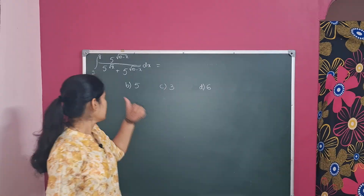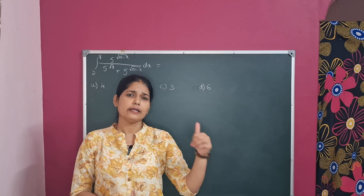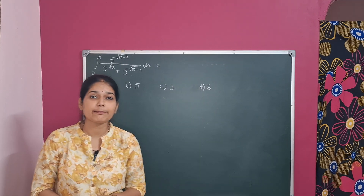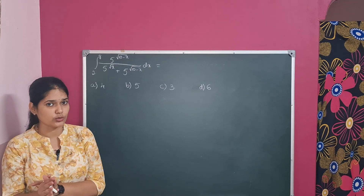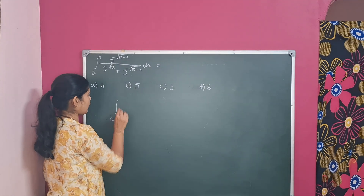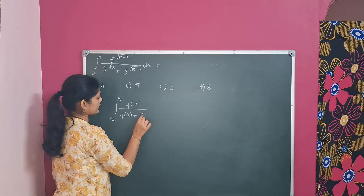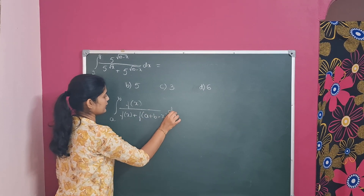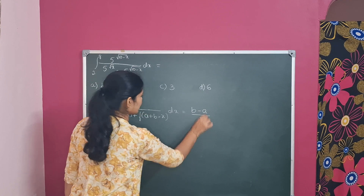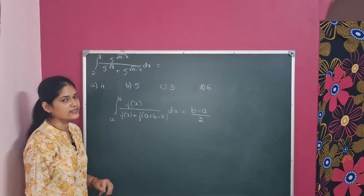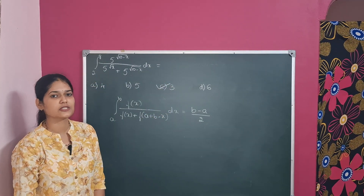The next problem depends on the definite integral — we discussed the relevant formulas in the previous video. The integral from 2 to 8 of [⁵√(10 minus x)] divided by [⁵√x plus ⁵√(10 minus x)] dx. This is of the standard form: integral from a to b of f(x)/[f(x) plus f(a plus b minus x)] dx, whose answer is simply (b minus a)/2. Therefore the answer is (8 minus 2)/2 equals 6/2 equals 3, which is option C.